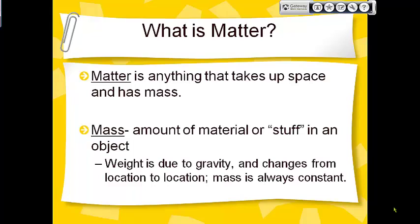Mass is how many particles you have in you, so mass pretty much stays relatively constant — you lose some particles here and gain some particles there, but all in all it's pretty constant. Whereas weight changes based on the gravity in the area you're in. On Earth, weight and mass are very similar, but as you travel out into space and go to other planets, it matters a great deal.